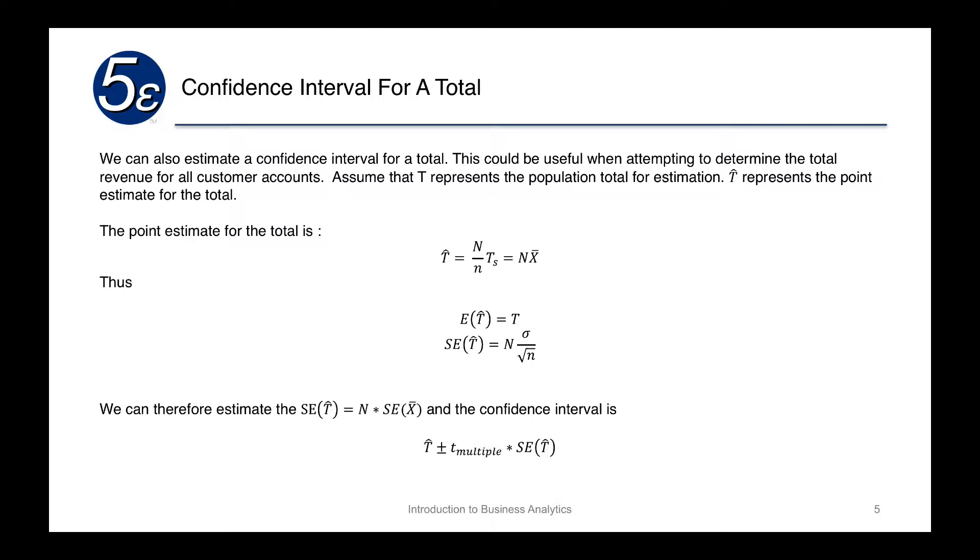T represents the population total for estimation, and T with the little hat over it represents our point estimate for the total. What we're basically saying is that if we knew individual accounts and we had a sample of the accounts,